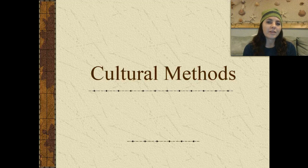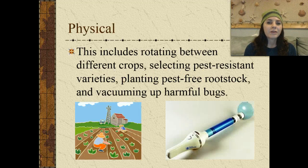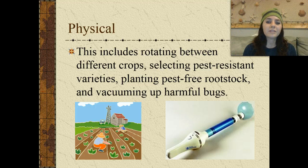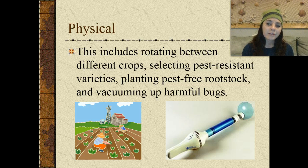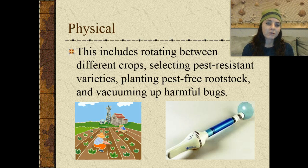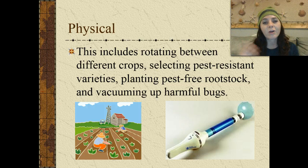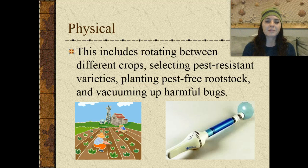So we have cultural methods. First of all, we're going to discuss physical. This includes rotating between different crops, selecting pest-resistant varieties, planting pest-free rootstock, and vacuuming up harmful bugs. So this is a physical approach as an alternative to pesticides.